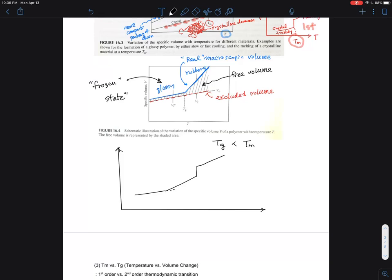You can see two different slopes. This is what we call glass transition temperature, and you can see there is a discontinuous jump in the volume at Tm. This is a glassy state with crystals in it, and this is rubbery. This is for semi-crystalline polymer.